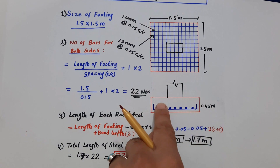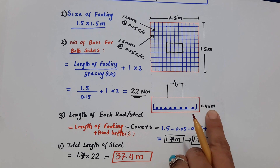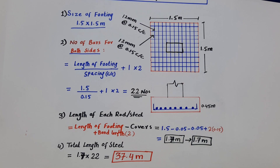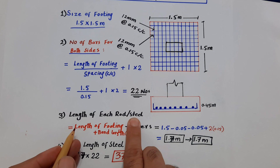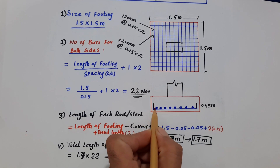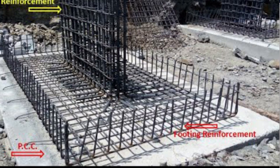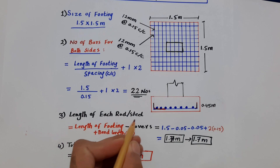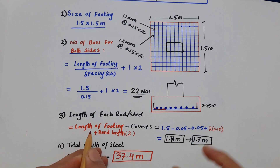You can see the cross-section of this footing. The depth is 0.45 meters, or 45 centimeters, or 450 millimeters. The third step is the length of each steel rod. You can clearly see the hooks on each end. Here is the ready mesh showing how the rods are arranged.